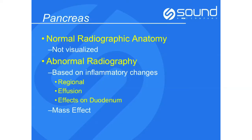The pancreas is actually a very difficult organ to evaluate radiographically because it's the same opacity as the remaining structures in the cranial abdomen. It's sandwiched in between the stomach and the transverse colon, and until it becomes abnormal you really can't see it. When it becomes abnormal on a radiograph, the soft tissue opacity of the pancreas is only seen because of the mass effect it creates. Inflammation generates a small amount of peritoneal effusion, causing you to lose some serosal detail in the cranial abdomen, but it's a very vague radiographic finding.